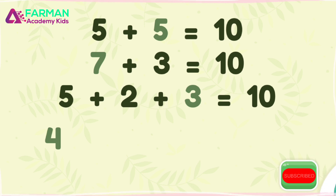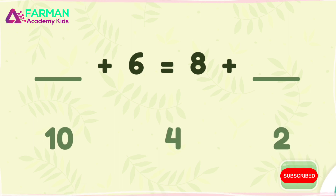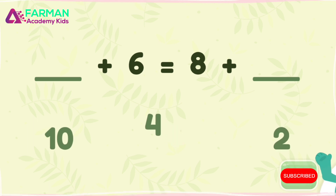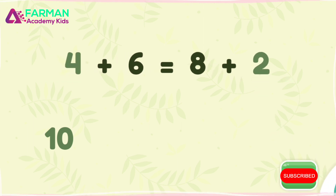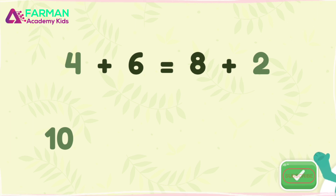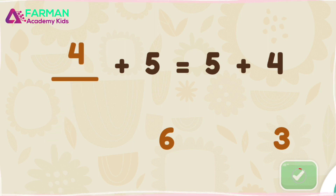That means that these equations all equal each other. This equation equals ten. Fill in the blanks with the correct numbers. Awesome! Both sides equal ten. That means that both sides equal each other. Both sides of the equation equal the same thing. Fill in the blank with the correct number.